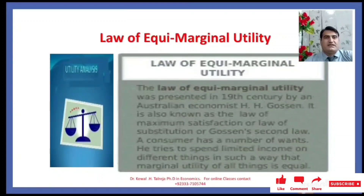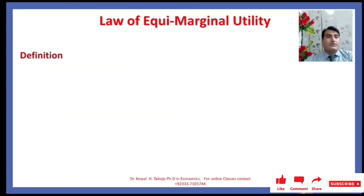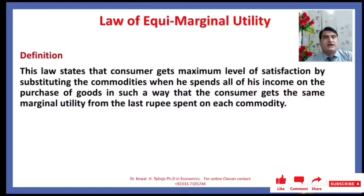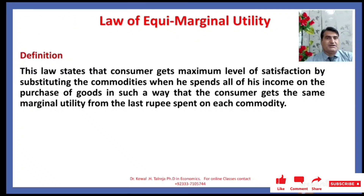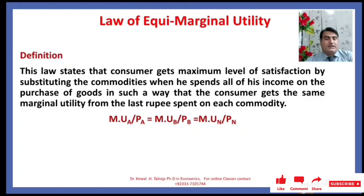The Law of Equimarginal Utility is basically a utility analysis. The law states that a consumer gets a maximum level of satisfaction by substituting commodities when he spends all of his income on the purchase of goods in such a way that the consumer gets the same marginal utility from the last rupee spent on each commodity. This law can be written as: MU(A)/P(A) = MU(B)/P(B) = MU(N)/P(N), covering all number of units.